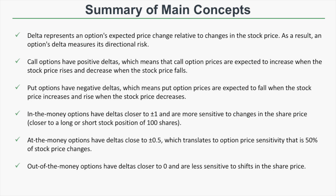Let's recap the main concepts. Delta represents an option's expected price change relative to changes in the stock price and therefore represents an option's directional risk or directional exposure. Call options have positive deltas — their prices are expected to increase when the stock rises and decrease when it falls. Put options have negative deltas — their prices are expected to fall when the stock increases and rise when it decreases.